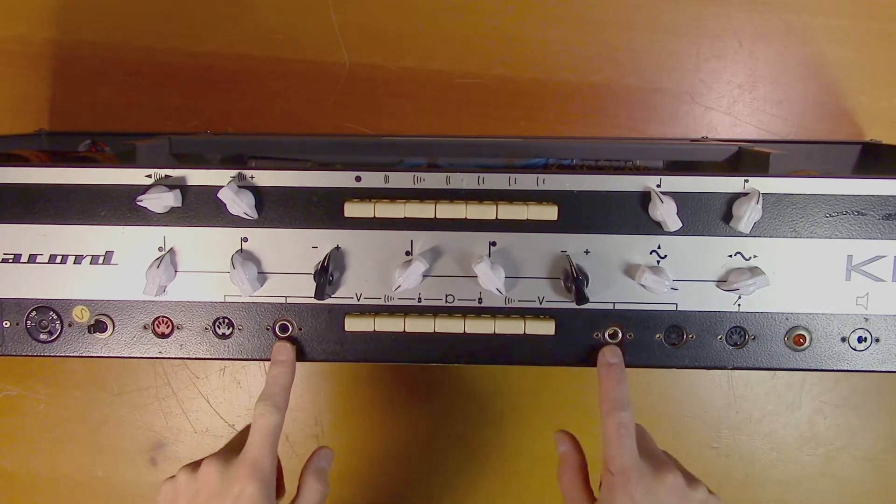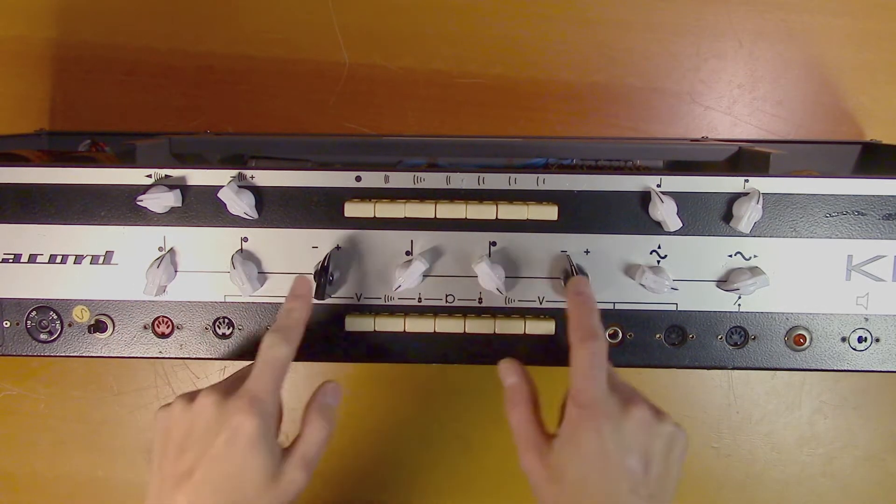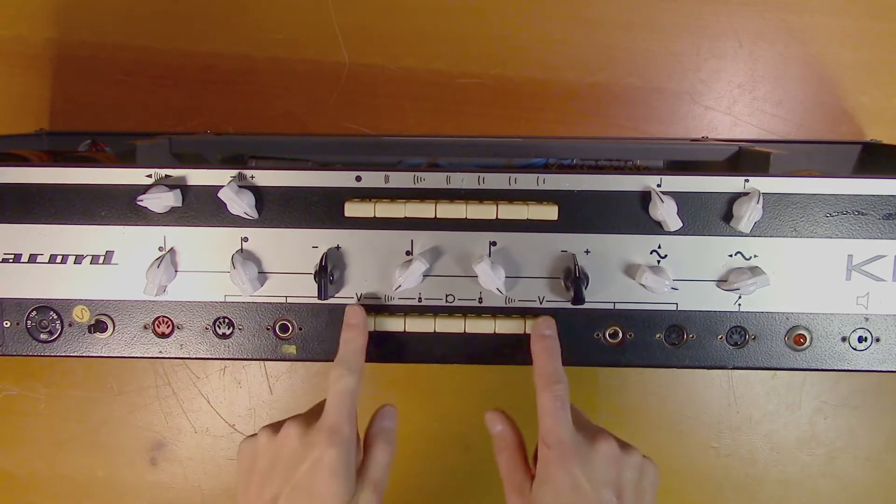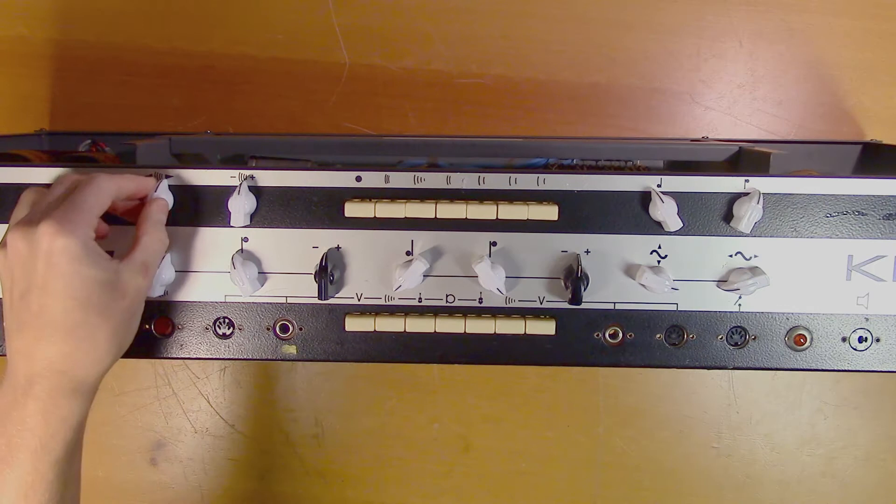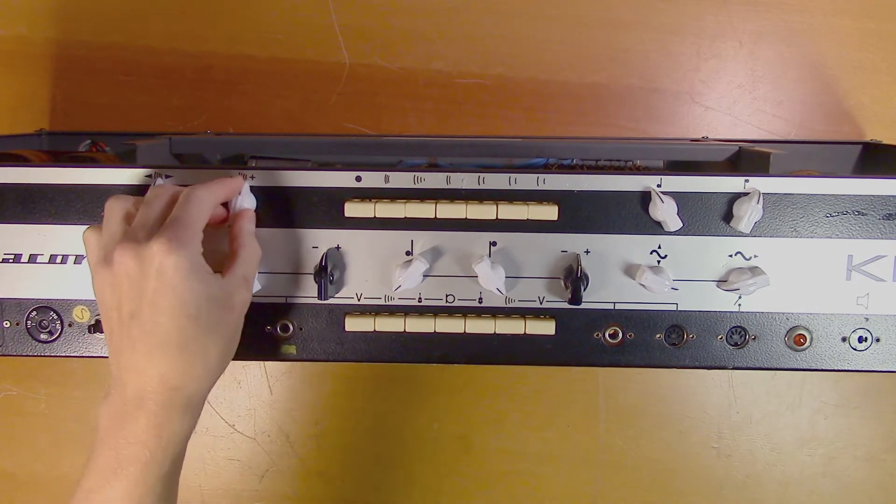So it's a two-channel amplifier. Each channel has their own bass, treble, and volume control, as well as tremolo and echo. Here you adjust the feedback of the tape echo, and here you adjust the volume.